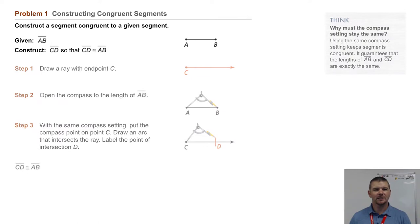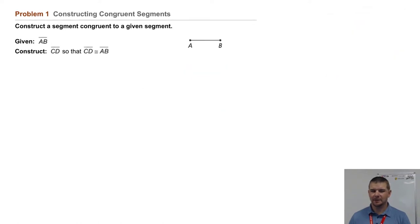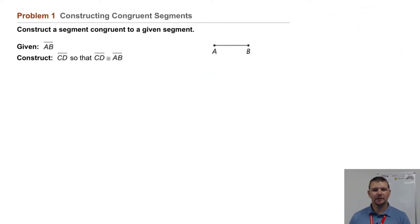Problem one, constructing congruent segments. Construct a segment congruent to a given segment. Given segment AB, as shown here, or drawn on your paper, construct segment CD so that segment CD is congruent to segment AB.